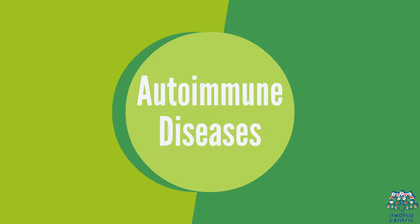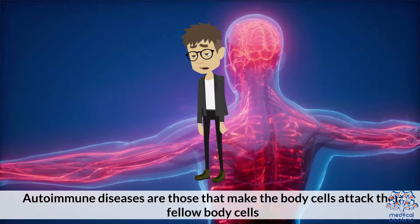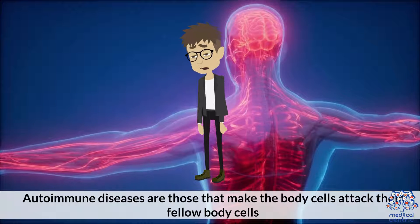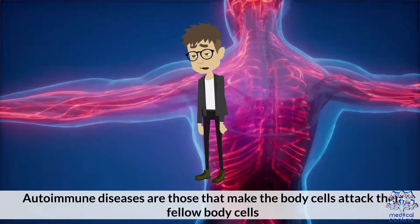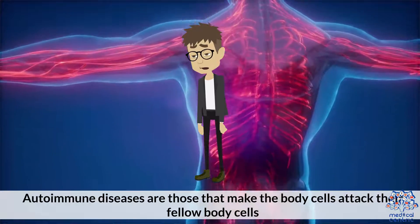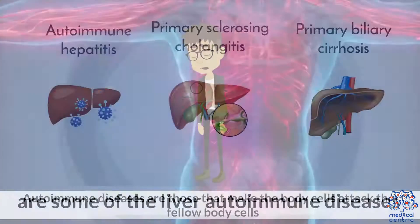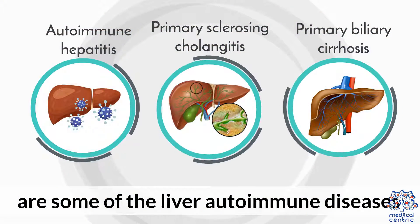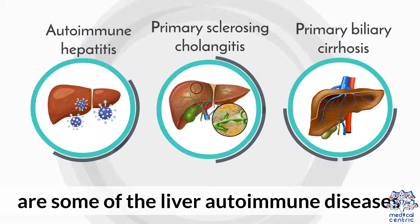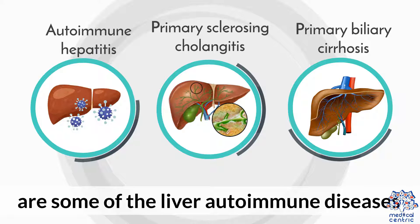Autoimmune diseases are those that make the body's cells attack their fellow body cells. Autoimmune hepatitis, primary sclerosing cholangitis, and primary biliary cirrhosis are some of the liver autoimmune diseases.